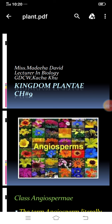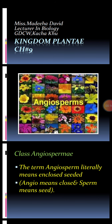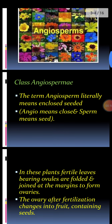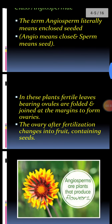In biology, Kingdom Plantae, chapter number 9, you will learn about flowering plants — angiosperms. As the name suggests, they are flower-producing plants. The term angiosperm literally means enclosed-seeded plants: 'angio' means closed and 'sperm' means seed. In these plants, fertile leaves bearing ovules are